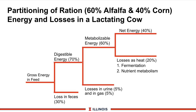The losses going from metabolizable to net energy are the fermentation losses in the rumen — the heat generated, rumen microbial growth, and those kinds of factors. That's why in pig diets it doesn't become a factor, because pigs don't have rumens.